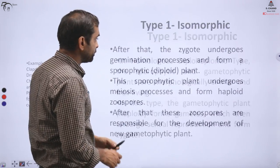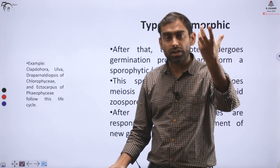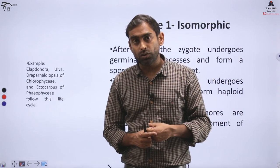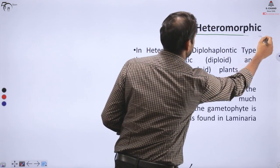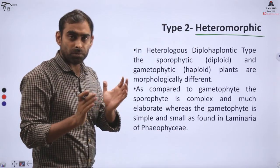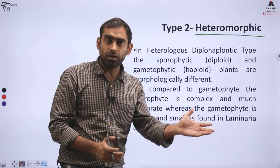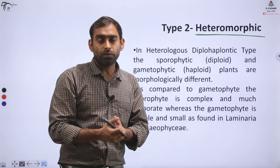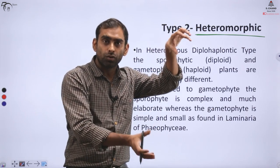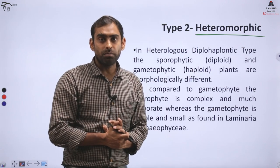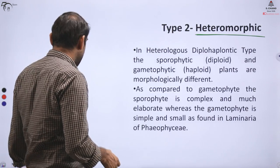So if alternation of generation is occurring, haploid organism and diploid organism look the same, then that type of life cycle we give the name isomorphic. Whereas if we talk about the opposite - if diploid organisms look different, their appearance is different, morphologically different - then they have been given a different name, called heteromorphic. So I hope you understood. There may be either isomorphic or there may be heteromorphic forms, or heteromorphic life cycles in haplodiplontic.